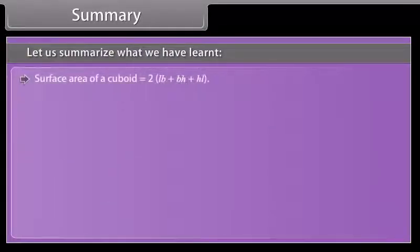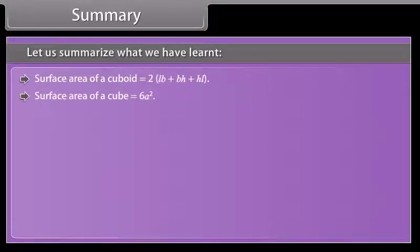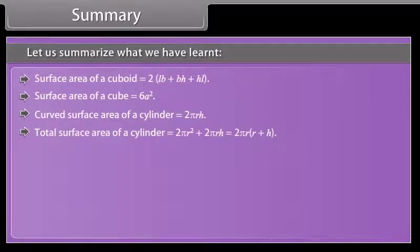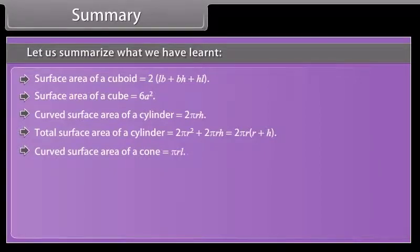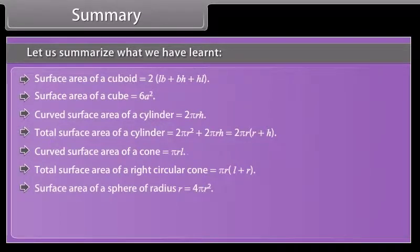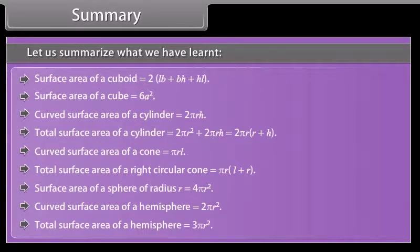Summary. Surface area of a cuboid = 2(LB + BH + HL). Surface area of a cube = 6A². Curved surface area of a cylinder = 2πRH. Total surface area of a cylinder = 2πR² + 2πRH = 2πR(R + H). Curved surface area of a cone = πRL. Total surface area of a right circular cone = πR(L + R). Surface area of a sphere = 4πR². Curved surface area of a hemisphere = 2πR². Total surface area of a hemisphere = 3πR².